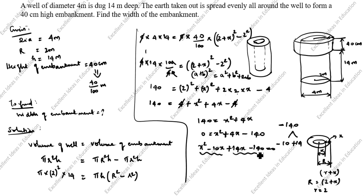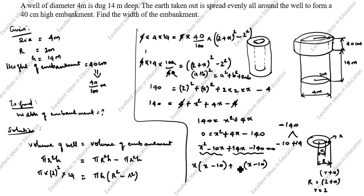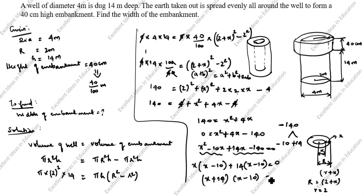We take pairs for factoring. First pair: x is common, giving x(x minus 10). Second pair: take 14 outside, giving plus 14(x minus 10). So this becomes (x minus 10)(x plus 14) equals 0.